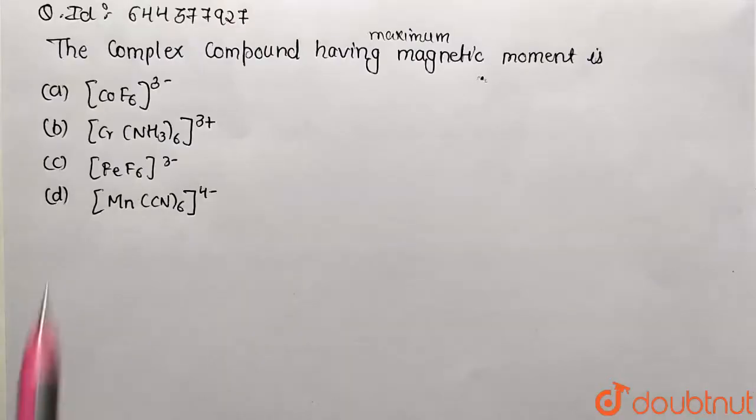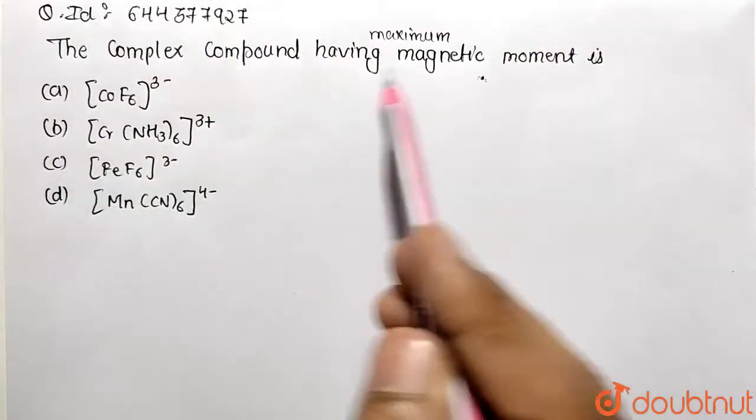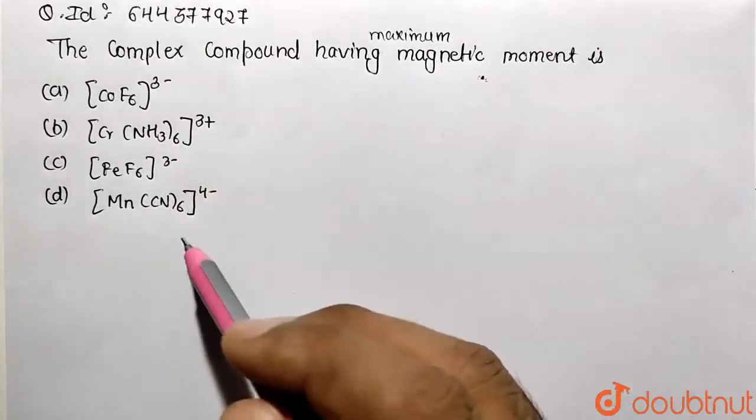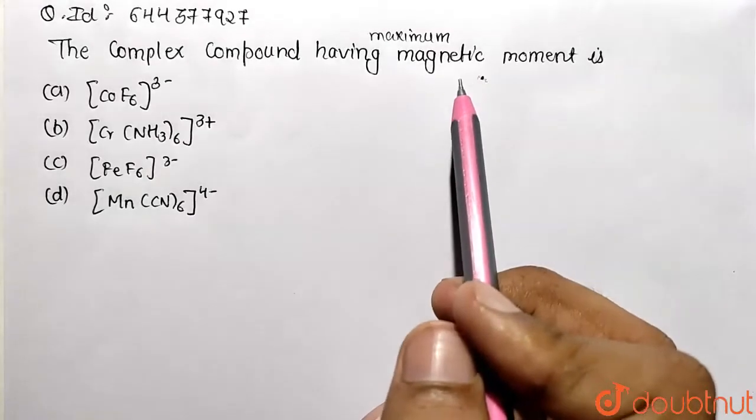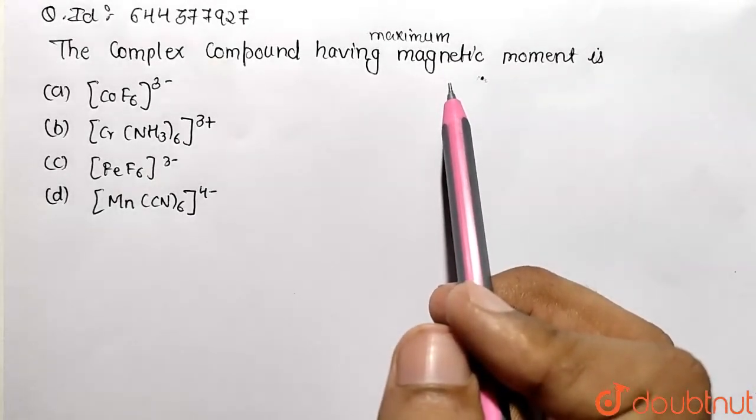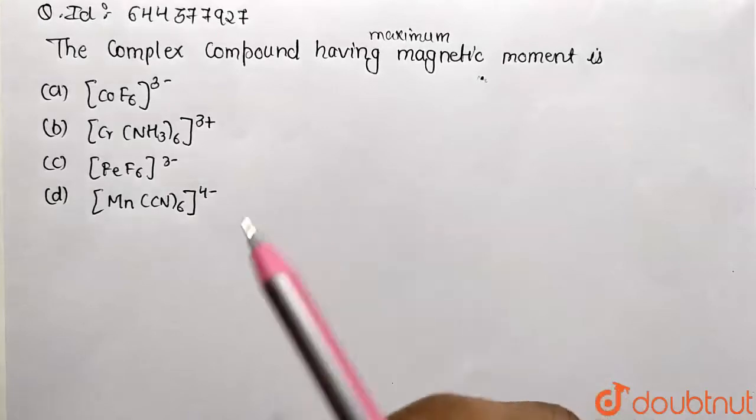Students, in this given question we need to find the complex compound having the maximum magnetic moment. These are the set of complex entities given. First of all, we must know that magnetic moment is maximum when we have the maximum number of unpaired electrons. So let's search for the unpaired electrons.